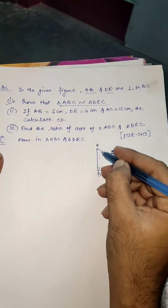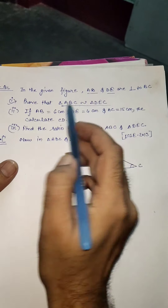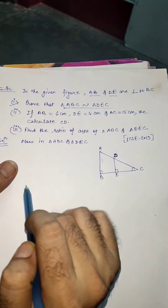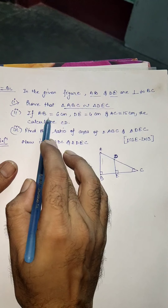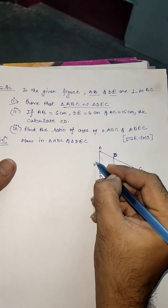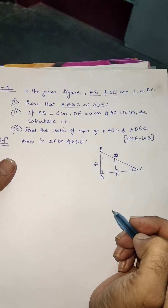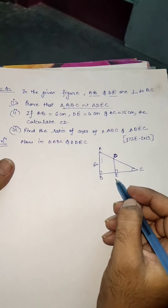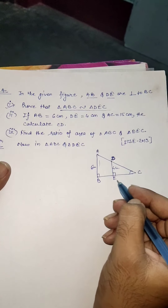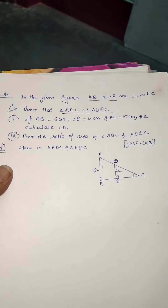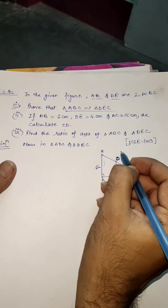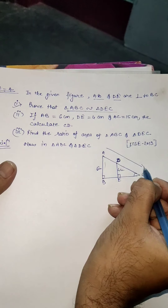We need to prove, in the first part, that triangle ABC is similar to triangle DEC. In the second part, AB is 6 centimeters, DE is 4 centimeters, and AC is 15 centimeters — this complete side is 15 centimeters.